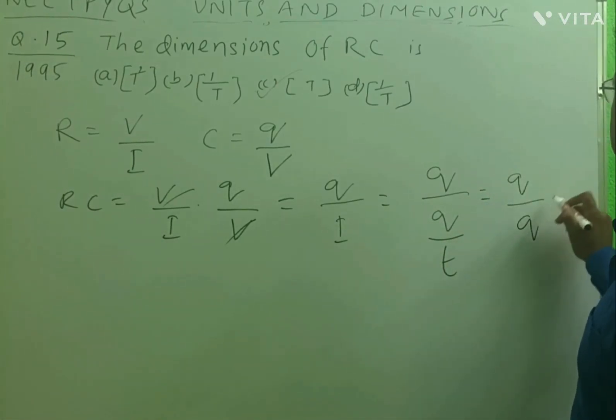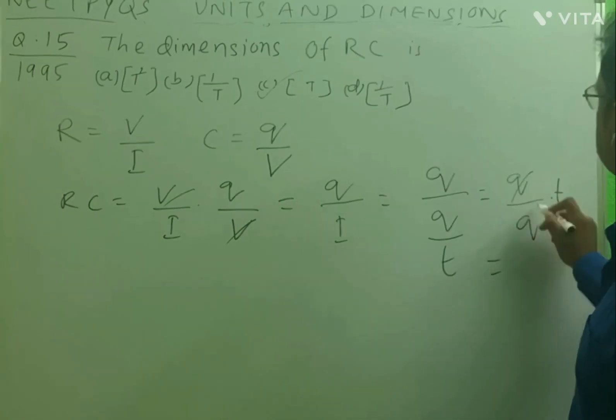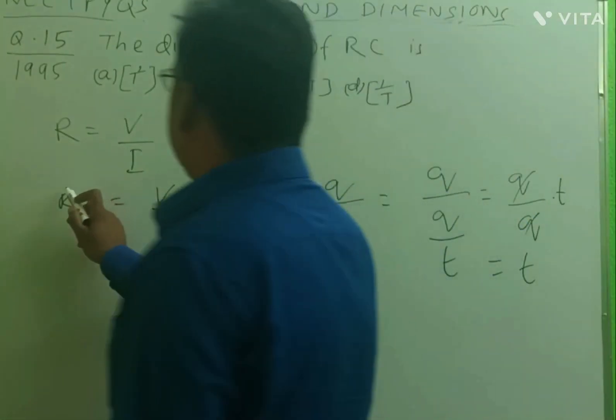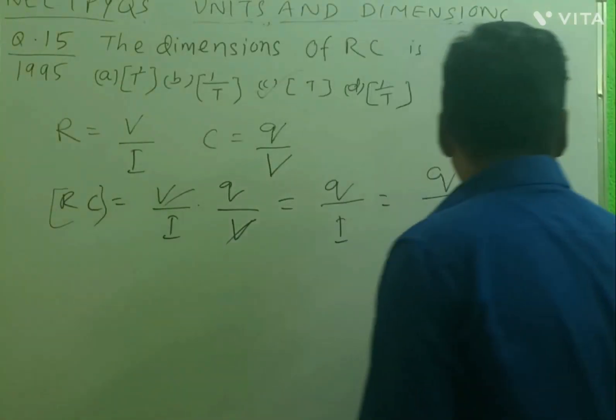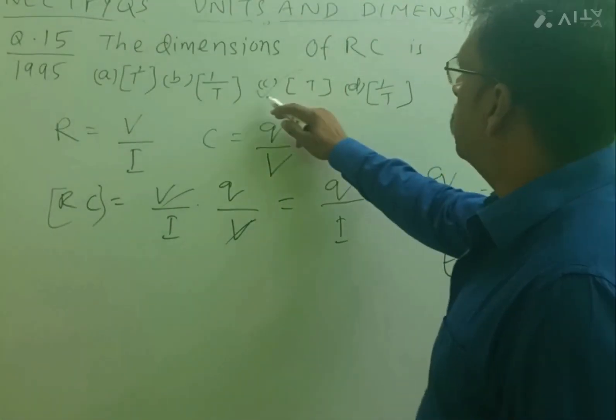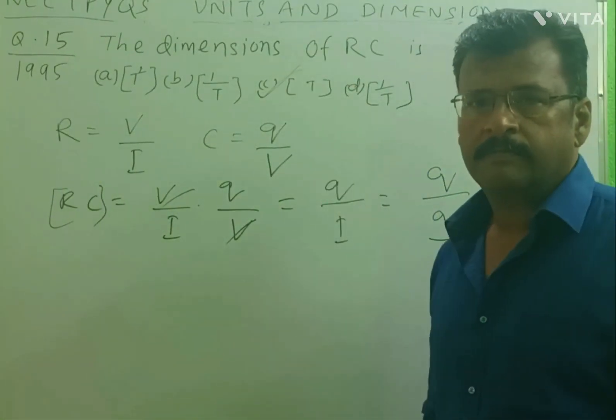So this is Q by Q into T. So this Q cancels out, this is T. So then what will be the dimensional formula of RC? RC will have the dimensional formula T. So this option C is correct.